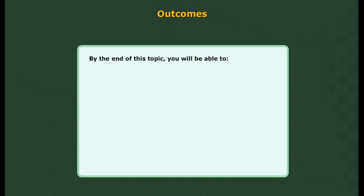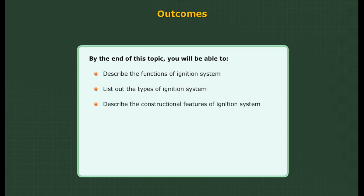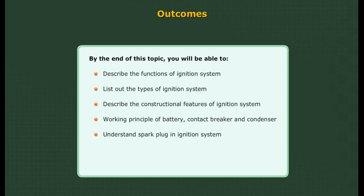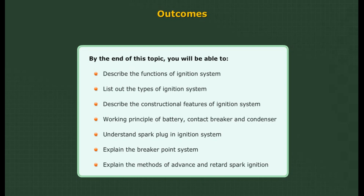Outcomes: By the end of this topic, you will be able to describe the functions of the ignition system, list out the types of ignition system, describe the constructional features of the ignition system, understand the working principle of battery contact breaker and condenser, explain the spark plug and ignition system, and explain the breaker point system and the methods of advance and retard spark ignition.